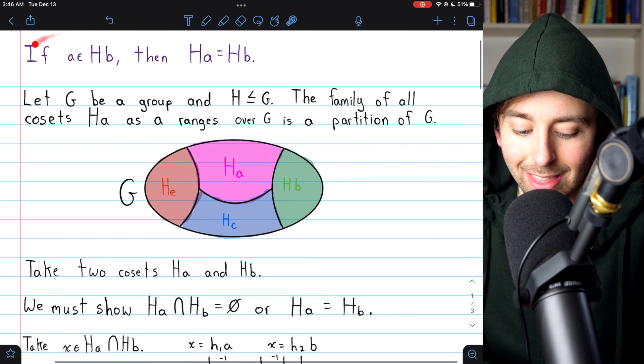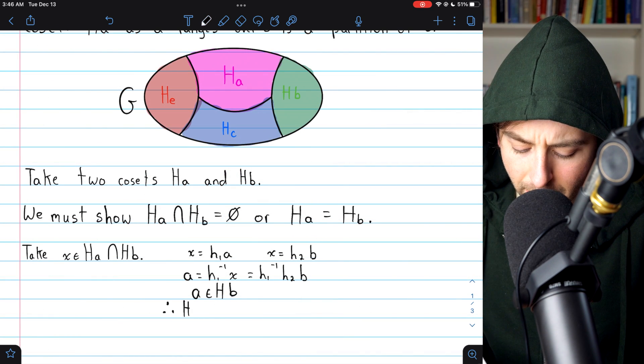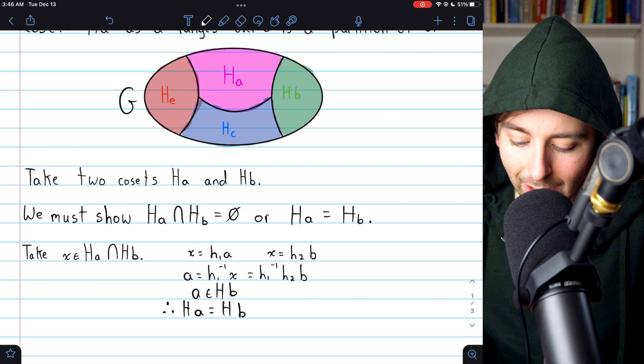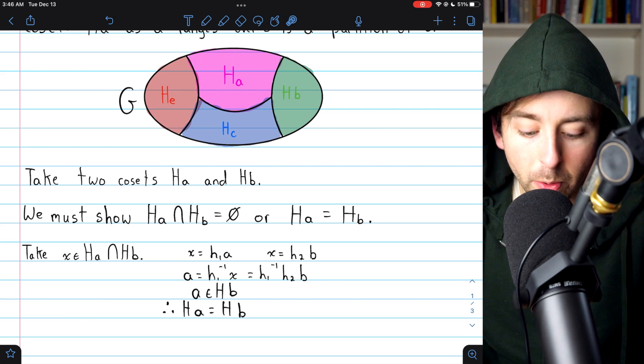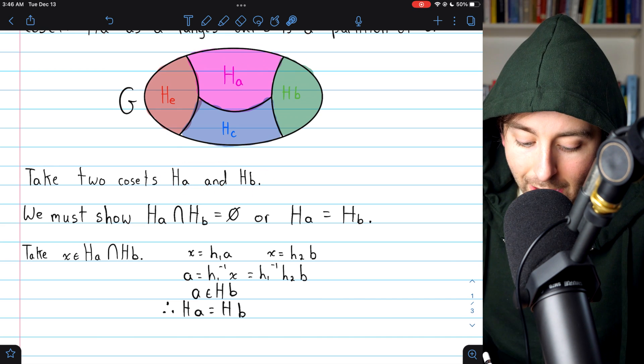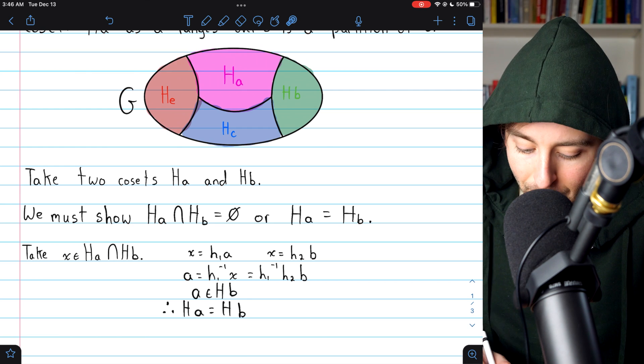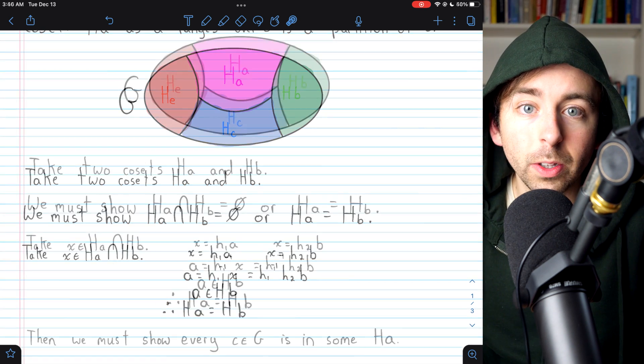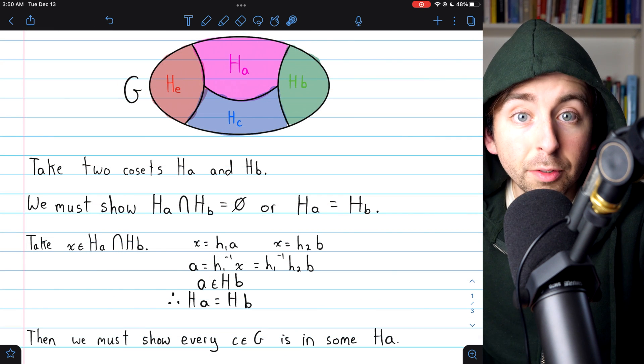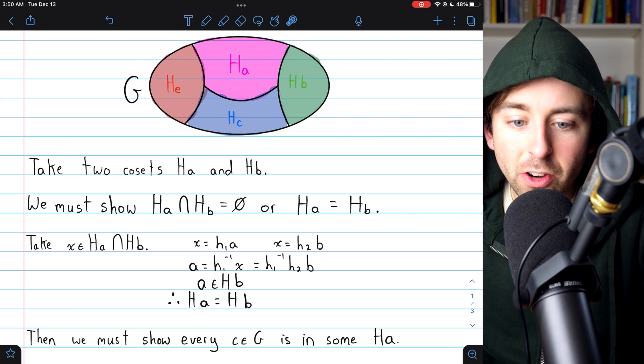And now we can apply this result. That allows us to conclude, as desired, that the coset Ha is equal to the coset Hb. Thus, we've shown that for any two cosets, Ha and Hb, either they are disjoint, or if they do have some overlap, they must be equal. And in fact, this is the bulk of the work for showing that our group G is partitioned by the cosets of an arbitrary subgroup H.